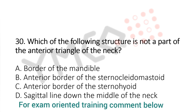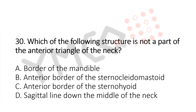Which of the following structures is not a part of the anterior triangle of the neck? A. Border of the mandible. B. Anterior border of the sternocleidomastoid. C. Anterior border of the sternohyoid. D. Sagittal line down the middle of the neck.